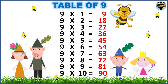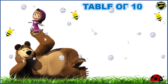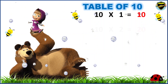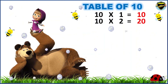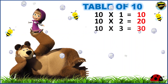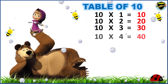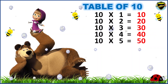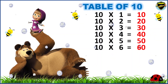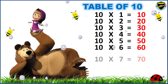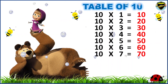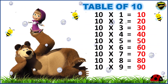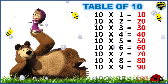Excellent! Now, let's learn the table of 10. 10 4s are 40. 10 5s are 50. 10 6s are 60. 10 7s are 70. 10 8s are 80. 10 9s are 90. 10 10s are 100.